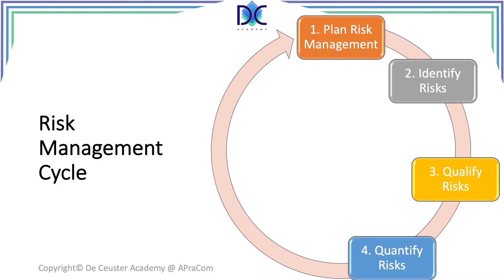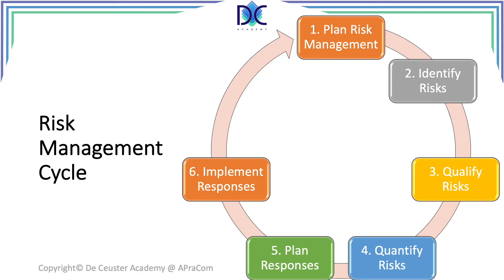The risks selected in the qualification process will now get quantified and we will calculate the financial impact on the project. Plan responses is about planning risk responses to deal with the selected and quantified risks. Once the project starts, these planned responses will be implemented. Implement responses is about implementing the planned responses, and the last step is control risk. Here we will evaluate how well the risk management plan is working and what improvements have to be implemented to increase efficiency or deal with unexpected events.